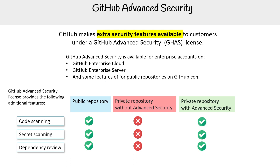What's confusing about this one in particular is it says some of the features for public repos, which makes me think there's more than three features. I could not find more other than the three listed — maybe if I made an enterprise account and contacted support I could figure that out, but that is a lot of work, especially for a foundations course.